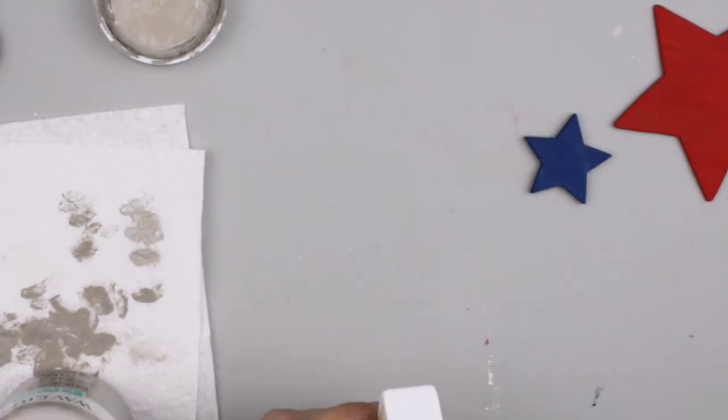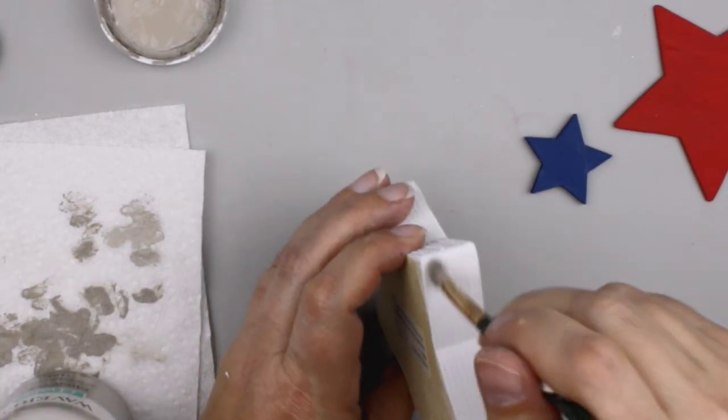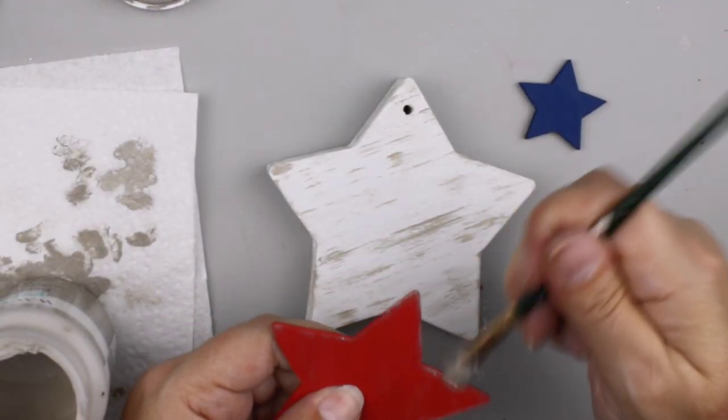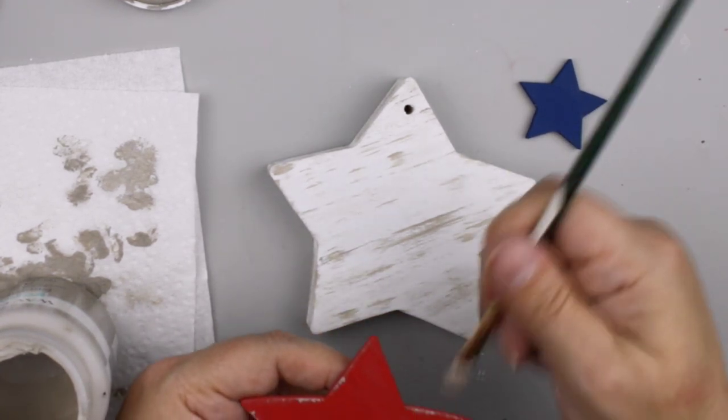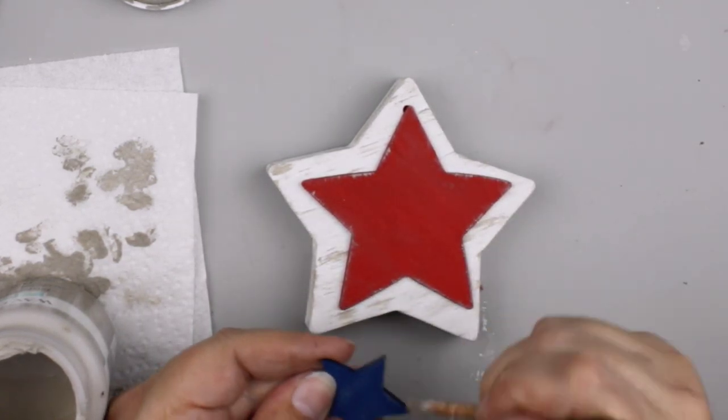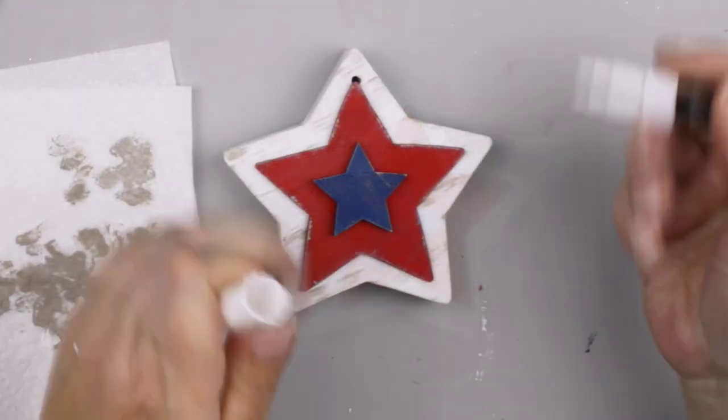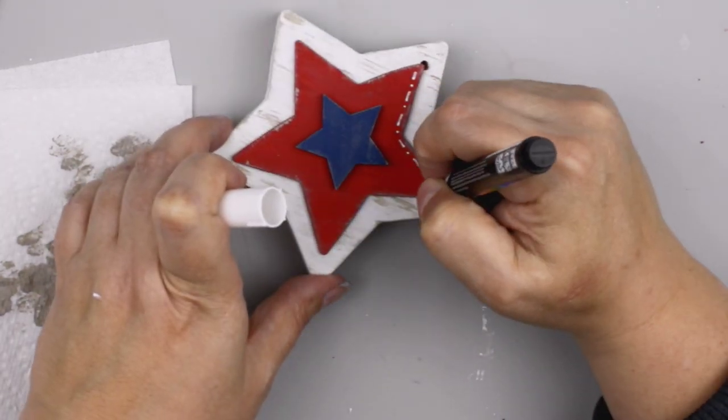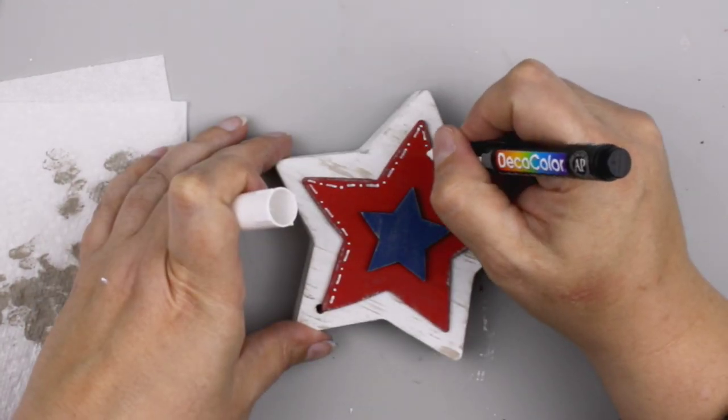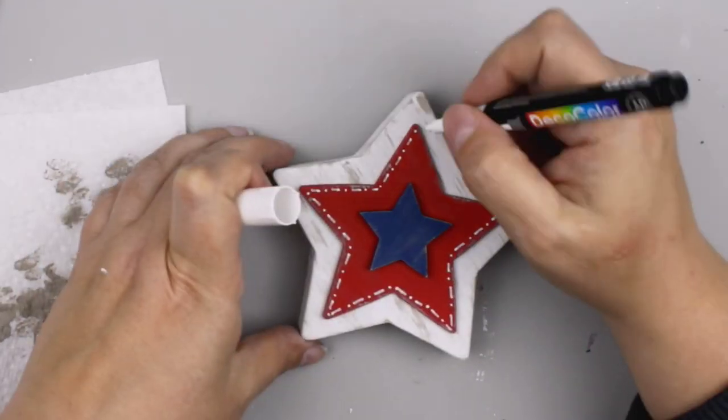So I painted the big star white and I'm going to go in and distress it with the Waverly chalk paint in mineral. And I'm going to do the front and the sides. And then I'm going to go in and just add a little bit on the edges of the red star and just kind of do a little distressing to all of the stars here. I just used hot glue to attach the red star to the white star and the blue star to the red star. And now I'm going to go in with those dots and dashes around the outside of the red star. And then I'll just add some cute little polka dots to the blue star.